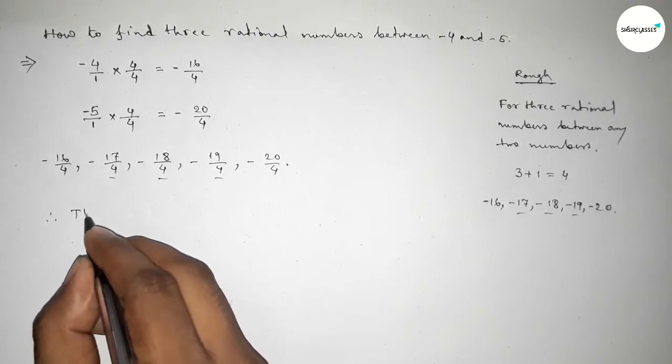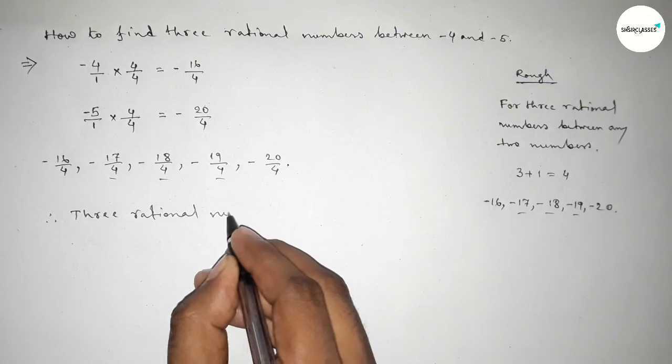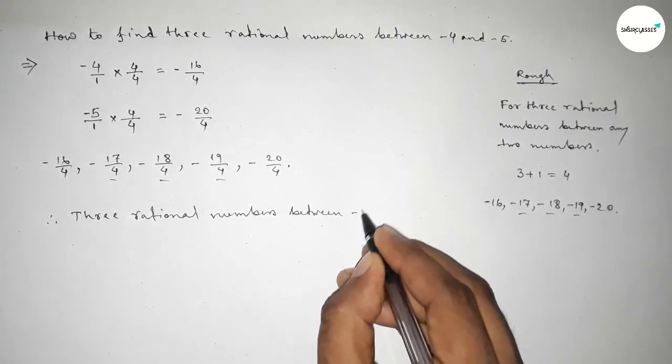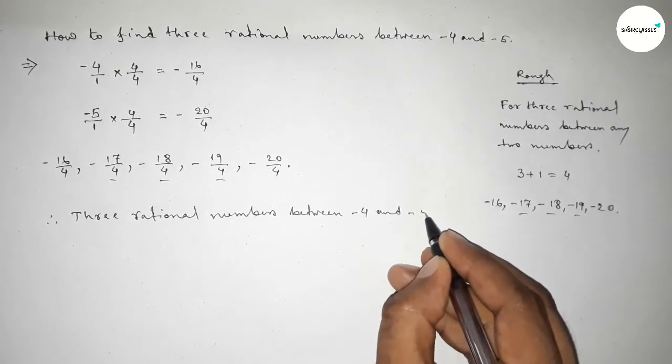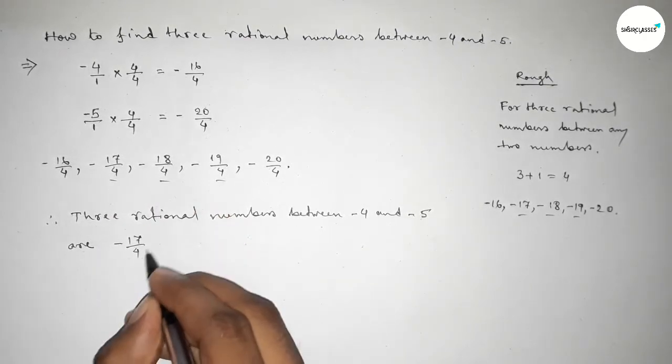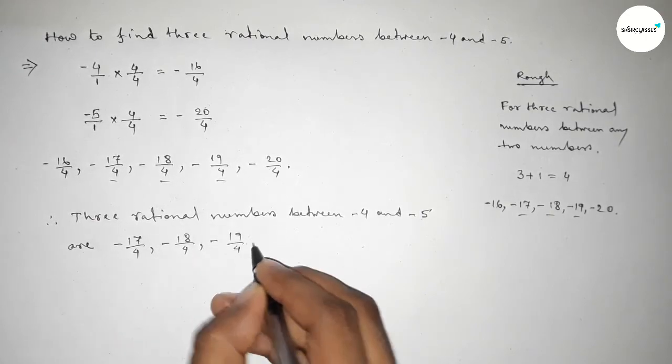Between -4 and -5. So therefore, the three required rational numbers between -4 and -5 are: -17/4, -18/4, and -19/4.